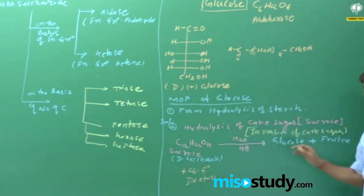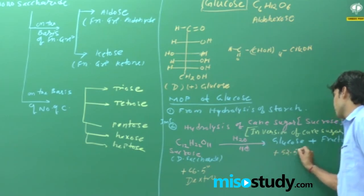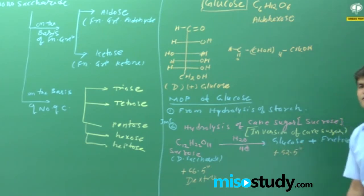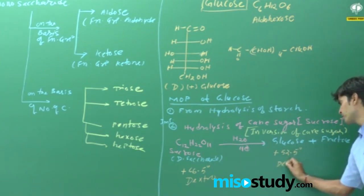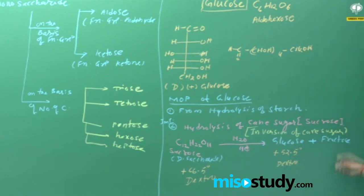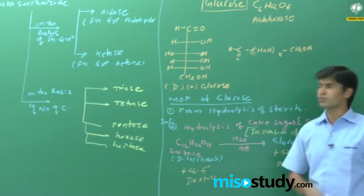After hydrolysis we have glucose and fructose. The optical rotation of glucose is +52.5 degrees, while fructose is levorotatory at -92.4 degrees. The overall mixture becomes levorotatory, which is why the rotation is said to be inverted — this is the inversion of cane sugar.